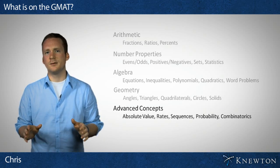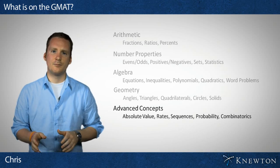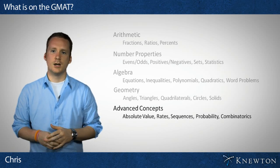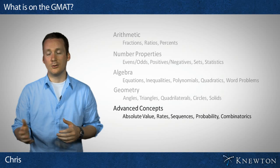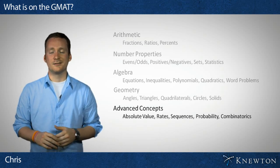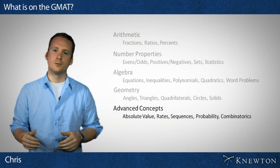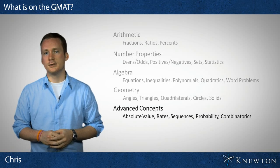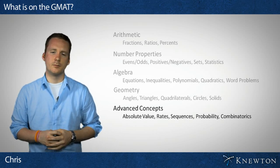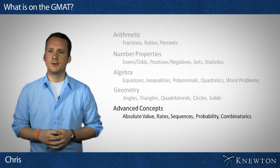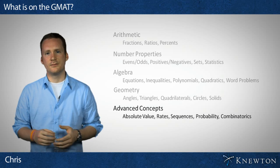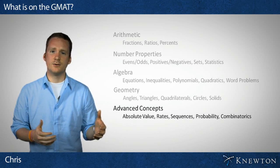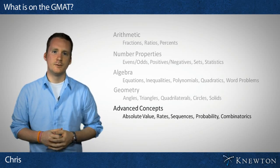And then finally, you're going to have some more advanced concepts. These include absolute value, which relates back to algebra, and rates and sequences — classic problems like two people painting a house at different rates, or one train leaving Chicago heading toward New York while another goes the opposite direction. When do they meet? Probability is also on there, at a slightly more advanced level than everyday use. And then combinatorics, which deals with sets and counting outcomes — like having five shirts and three pairs of pants and calculating total possible outfits.